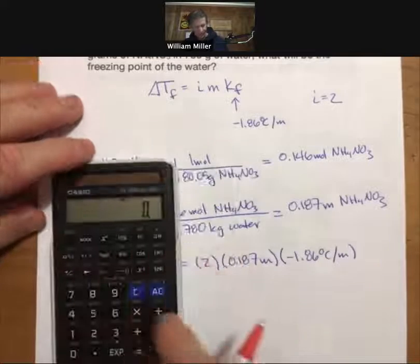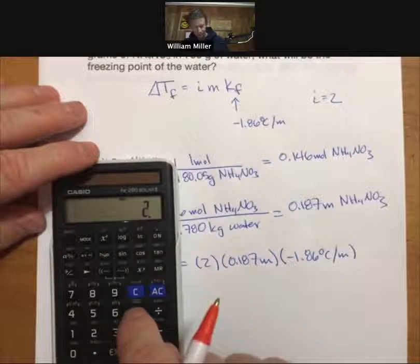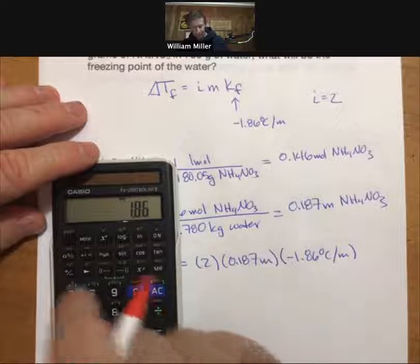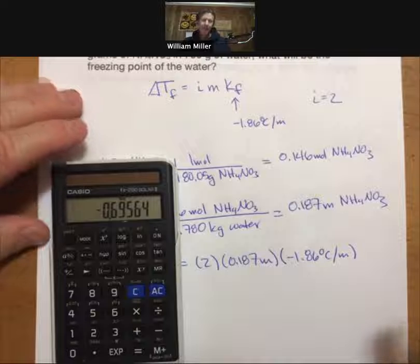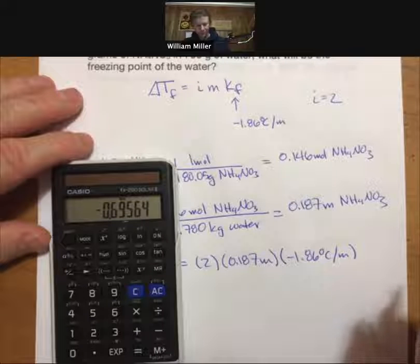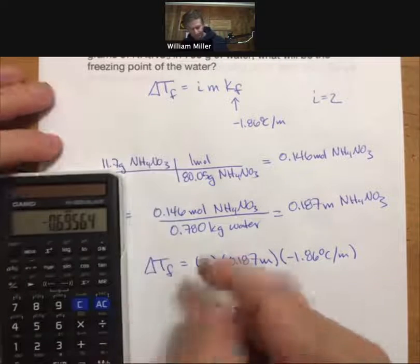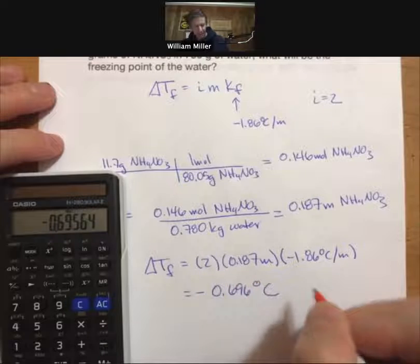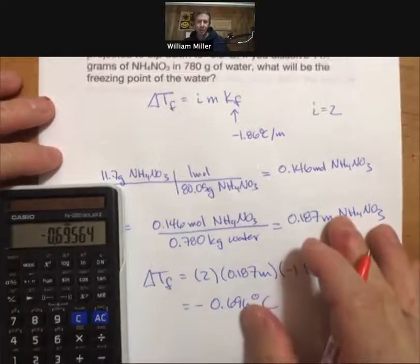Let's see, two times 0.187 times 1.86 minus, get minus 0.696 degrees Celsius. That is your freezing point depression.